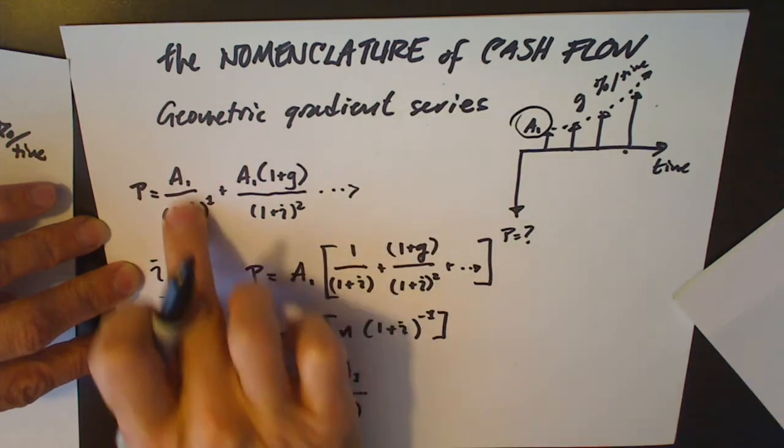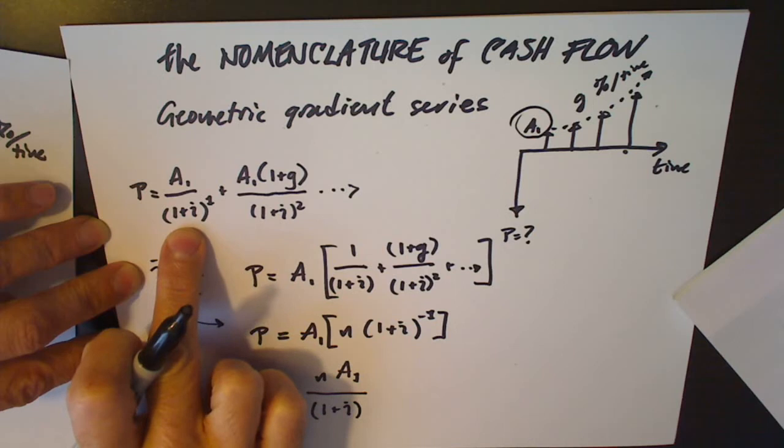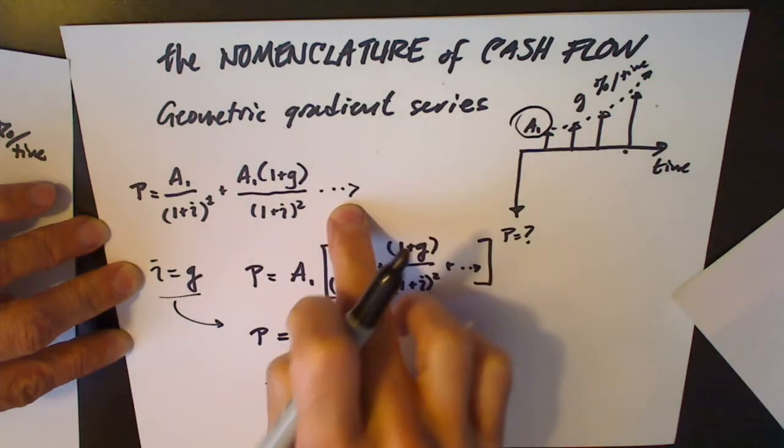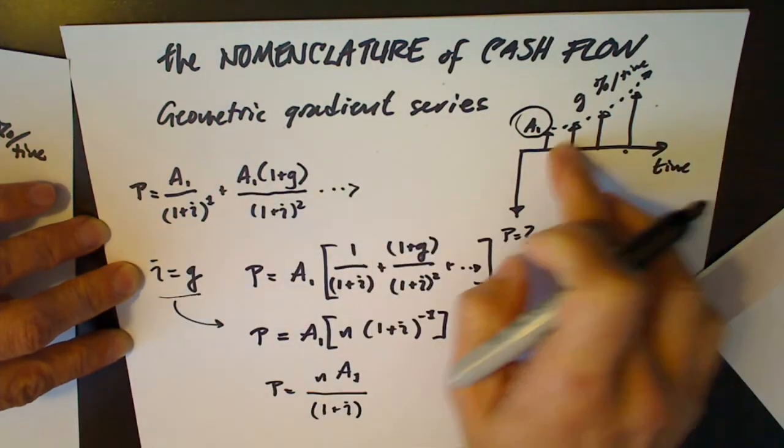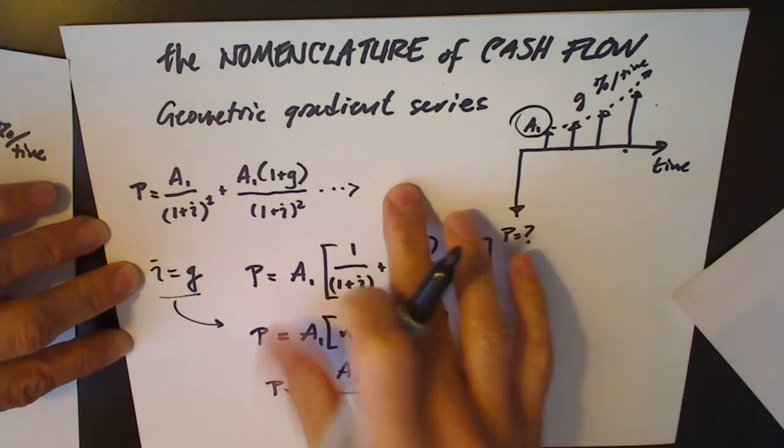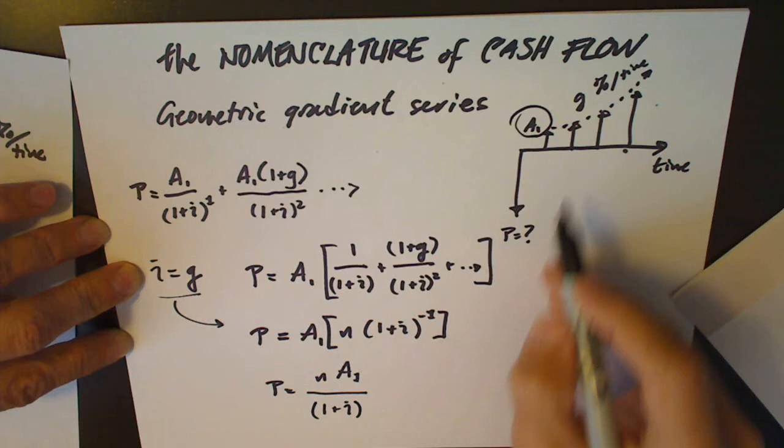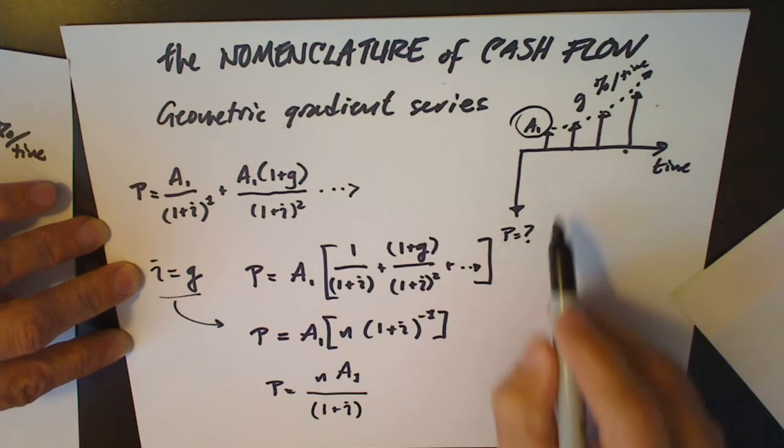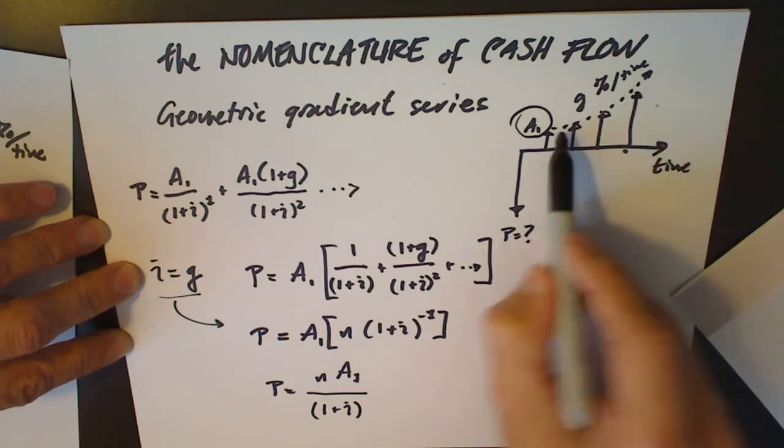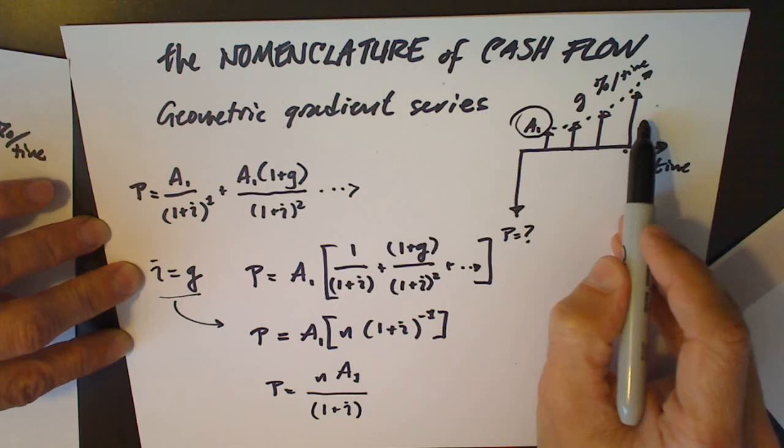Which looks a lot like this first term with each one of the additional terms. And this allows us to calculate the present value of a geometrically increasing series of payments and that's the most important application of this might be estimating a stock price or calculating how much an ongoing company is worth.